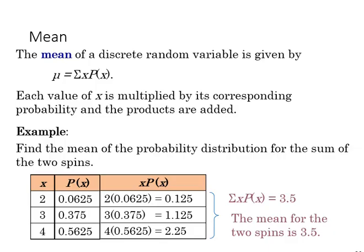Next, we can find the mean of a discrete random variable given by this equation. Mu is the sum of x times P(x), which is the probability of x, and so if we go down and we simply multiply the outcome by the probability for each of the outcomes and their associated probabilities, and then we can sum those together. We get the sum of x times P(x) is 3.5, so the mean for the two spins is 3.5.